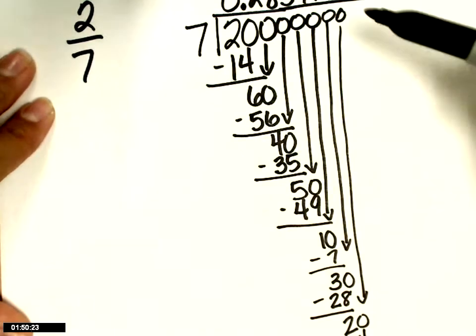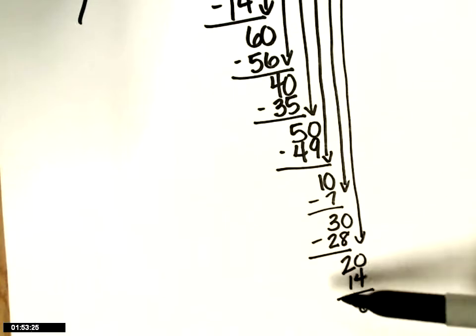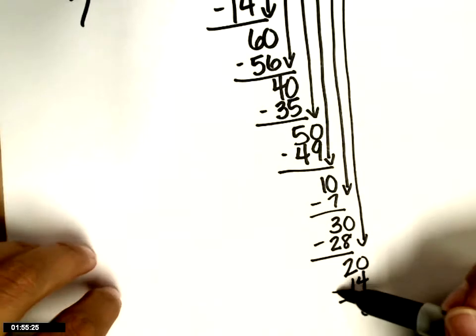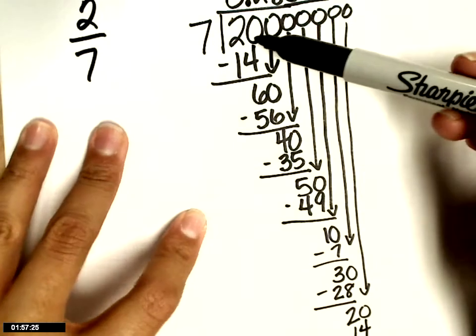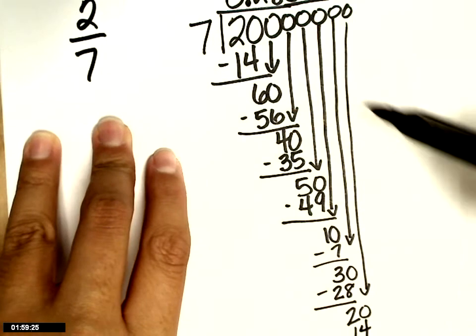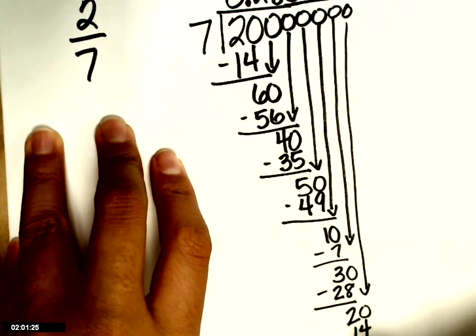And so this that's happening down here, 20 minus 14, happened right up here at 20 minus 14. So I know that the pattern is going to continue.